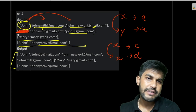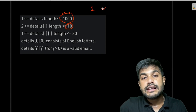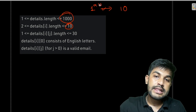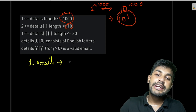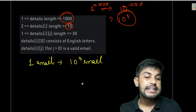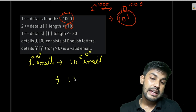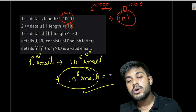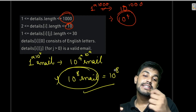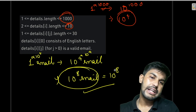How feasible is this? The maximum number of details is 1000 and details length is 10, meaning for one person there are 10 emails. For 1000 persons, there are 10^4 emails total. If we have one email and need to check 10^4 others, and generate 10^4 emails, that is 10^4 multiplied by 10^4 which equals 10^8 operations. If total operations are less than or equal to 10^8, that is feasible, so we can move forward.